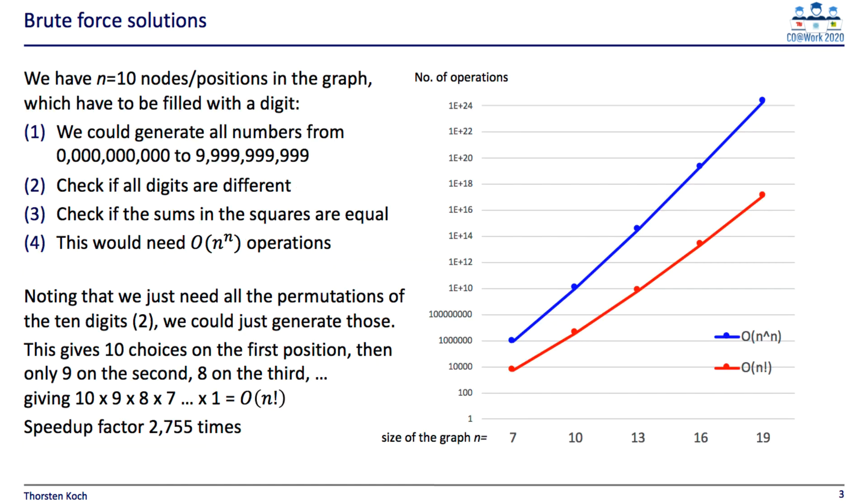Let us have the computer to solve this. If we do stupid brute force and just try all numbers from 0 to 10 trillion minus 1, we would have a complexity of n to the power of n. But as we notice, we only need the permutations of the 10 digits, so if the graph has 10 nodes, we have 10 factorial, or 3 and a half million possibilities.